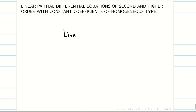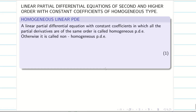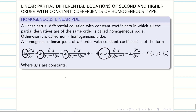What is meant by linear PDE? A PDE is said to be linear if the dependent variable and the partial derivatives of the dependent variables are in first degree only. A PDE is said to be homogeneous of order n if all the derivative terms are of order n and the coefficients are constants.